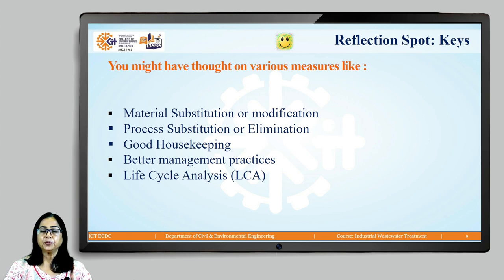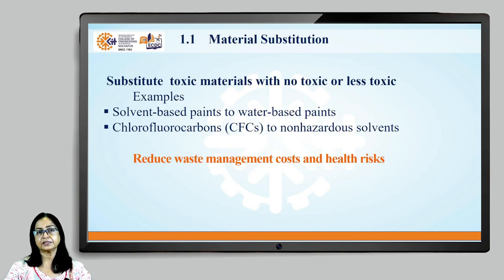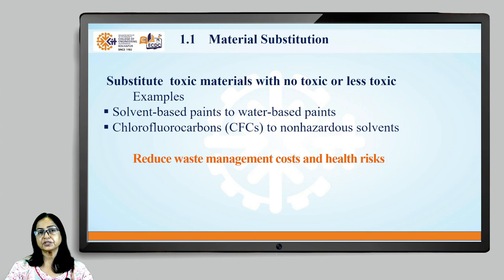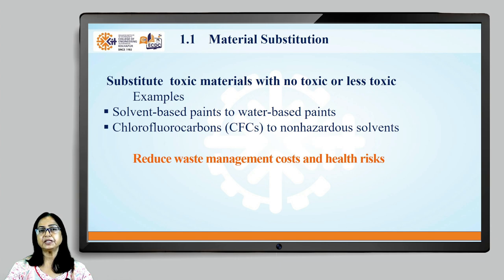Reduction at source can be achieved by measures like material substitution or modification, process substitution or elimination, good housekeeping, better management practices, and life cycle analysis. Material substitution targets toxic material that is difficult to treat or harmful to the environment and tries to replace it with less toxic or non-toxic material.